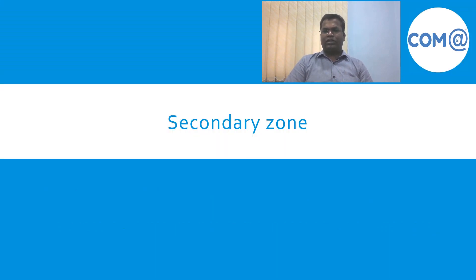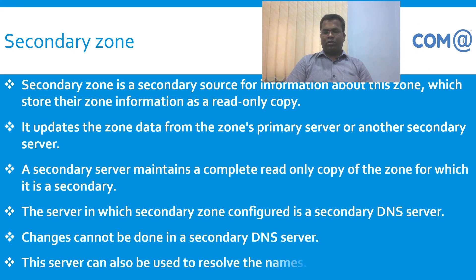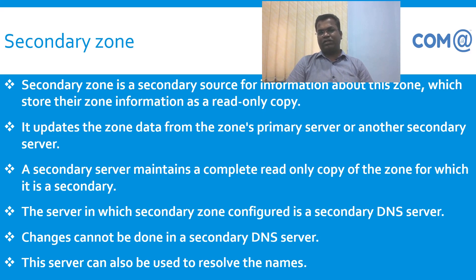Now we understand the secondary zone. The secondary zone is the secondary source, maintaining only a read-only copy. The secondary zone records replicate from the primary zone as a read-only copy. The secondary zone is configured on a secondary DNS server. Changes cannot be made directly on the secondary DNS server — changes are made on the primary DNS server, and through replication those changes update the secondary zone.